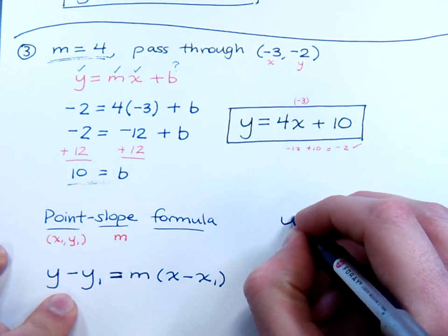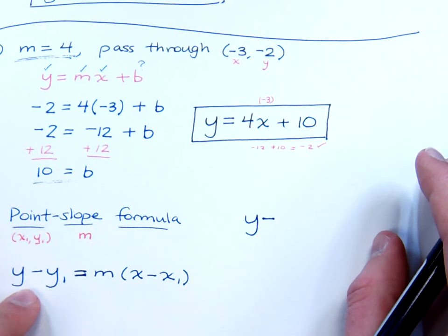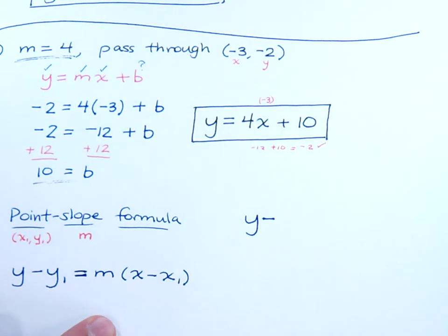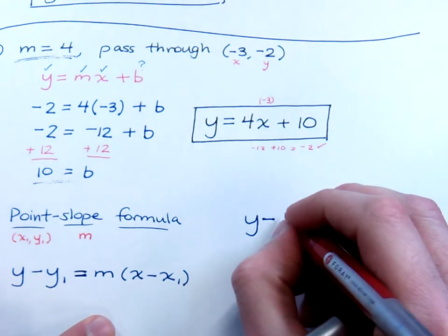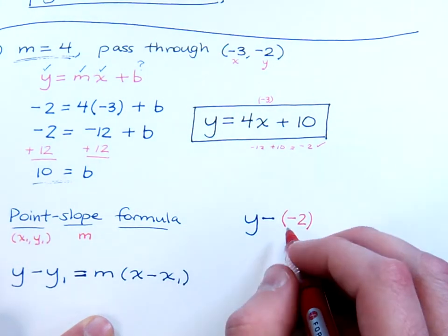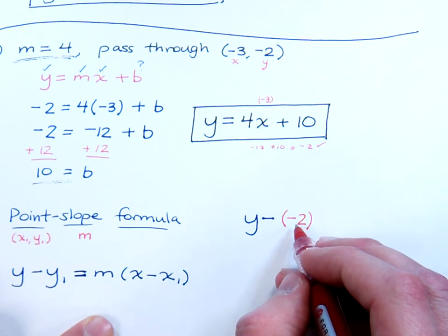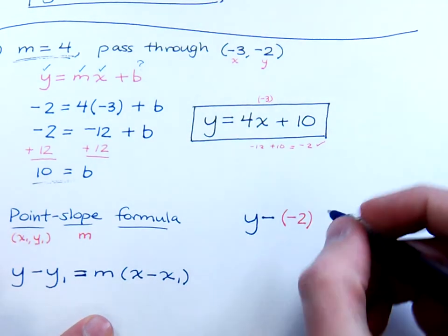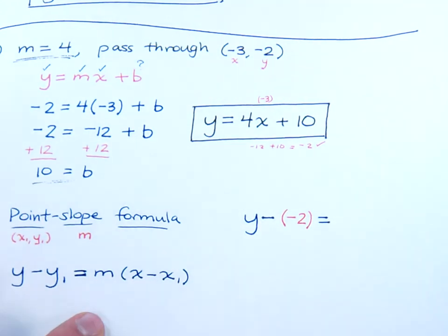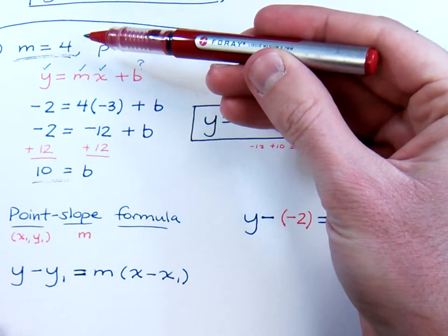So, I'm going to keep my y the way it is, minus... Now, your y1 is just going to be this y-coordinate that we used up here. Now, when you plug in, make sure you use parentheses, be very careful. So, that's minus a negative 2. The minus is part of the formula, the negative 2 comes from the coordinate itself. And this is going to equal your slope, and of course your slope was already given up here as being positive 4.